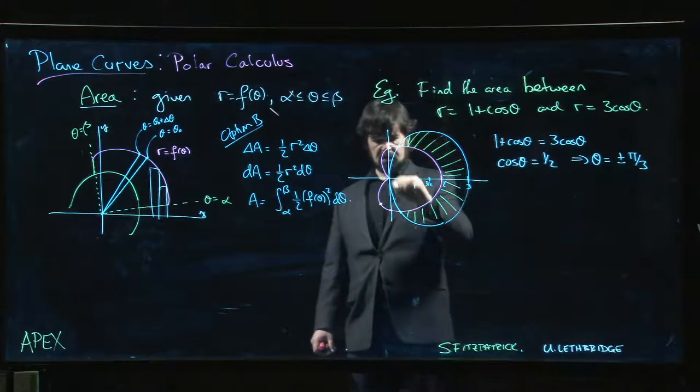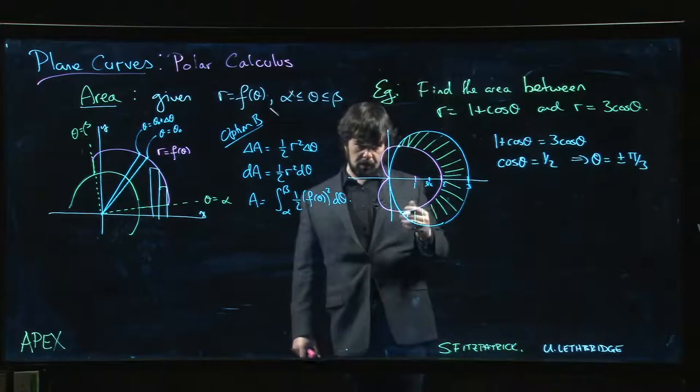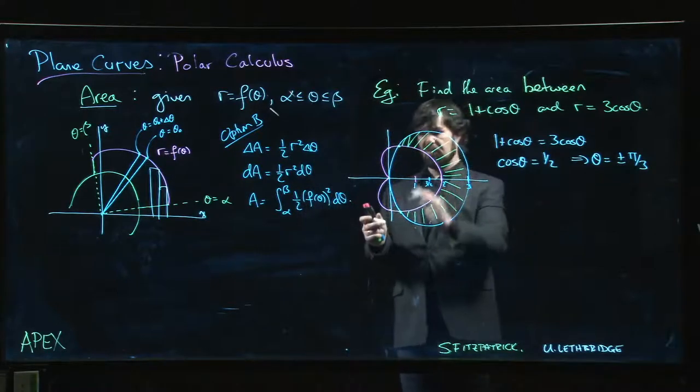That suggests that theta should be plus or minus pi over three. So minus pi over three down here, plus pi over three up there. Fits more or less with the drawing.